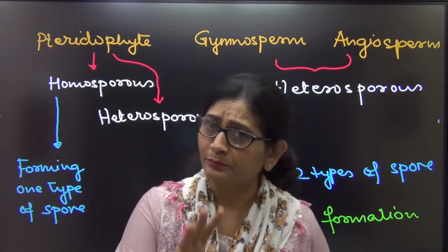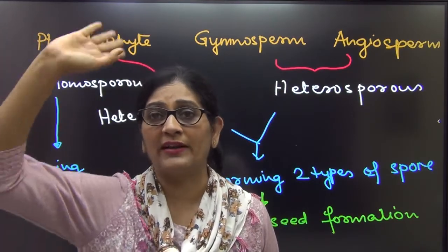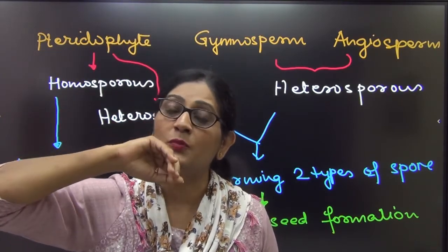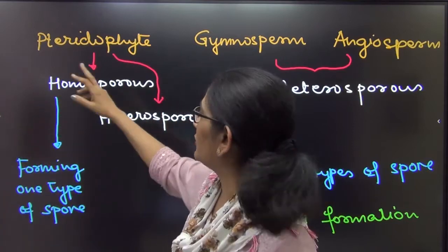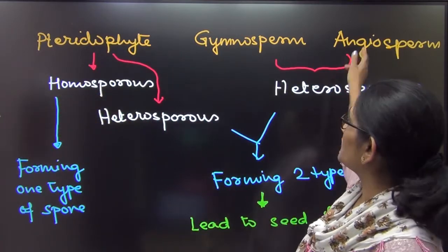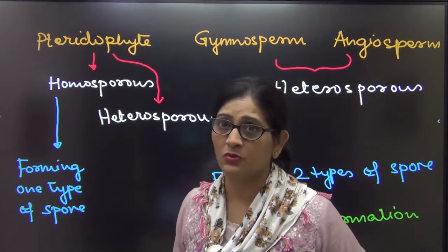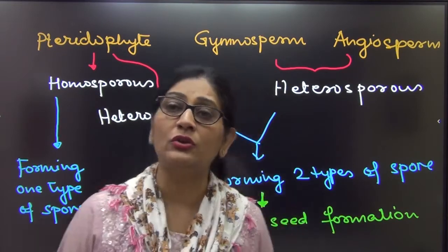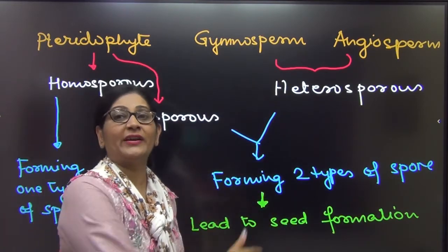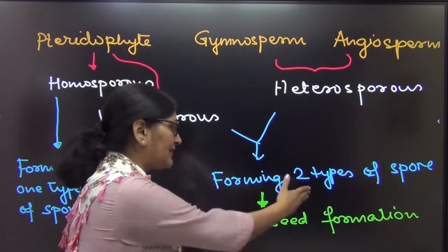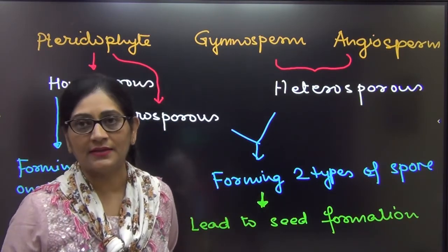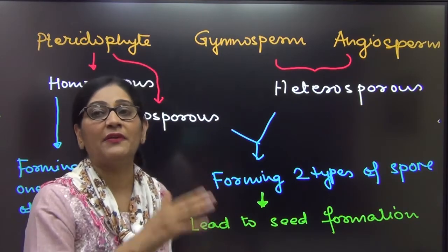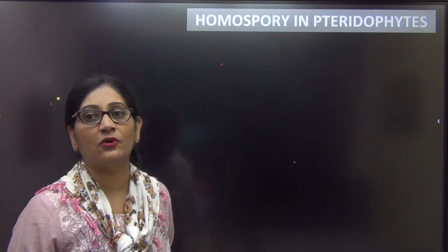So we have learned that in pteridophyte, gymnosperm, and angiosperm, the main plant body is a sporophyte, so they will form spores. In pteridophytes they form only one type of spore, so they are homosporous. In gymnosperm and angiosperm they form two types of spores, so they are heterosporous. Some pteridophytes also show heterospory. Heterospory enabled the plants to form seeds. Let us first find out what is homospory, then heterospory, and then how heterospory helped in seed formation.